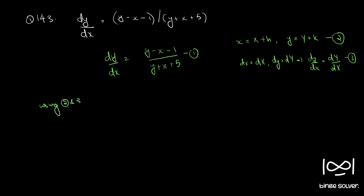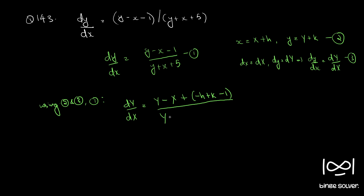Using equations 2 and 3, our equation 1 becomes: dY by dX is equal to (capital Y minus capital X plus minus h plus k minus 1) by (capital Y plus capital X plus h plus k plus 5). Let's call this equation 4. If you observe, equation 4 is not homogeneous.